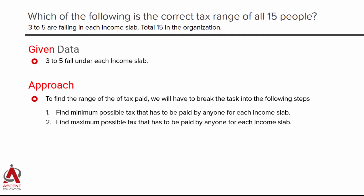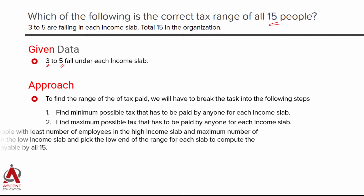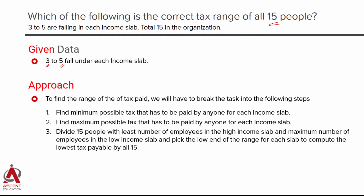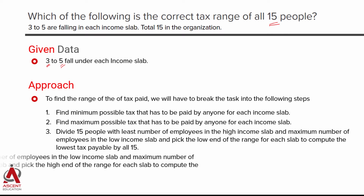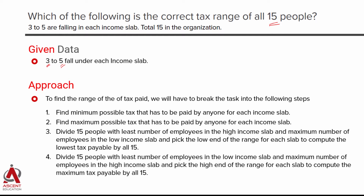Steps two and three are where the second layer comes in. We've found the minimum and maximum tax for each slab, but we need the range of tax for all 15 people — keeping in mind at least 3 and at most 5 people per slab across four slabs. For the low end of the tax bracket, maximize people in the lowest income group. For the high end, maximize people in the highest income group and find the maximum tax per slab.